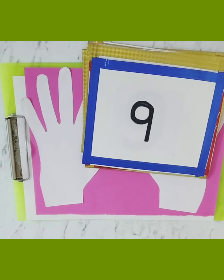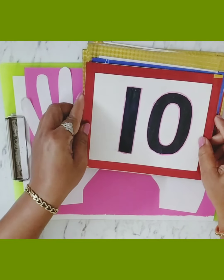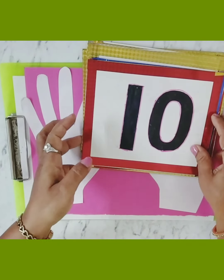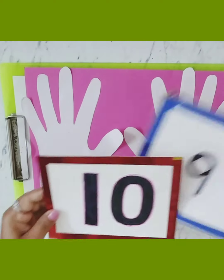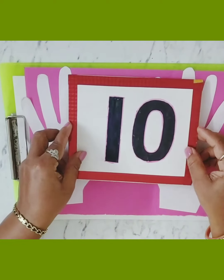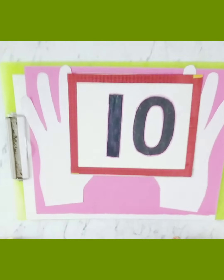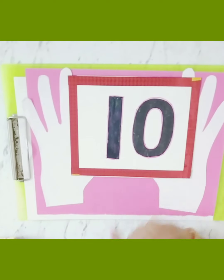Yes, aur humne abhi tak nine numbers seekhe hai, hai na? And now you know which number comes after nine. Bata do mujhe koon sa number aata hai nine ke baad mein. After 9 comes number 10. So children, this is number 10. Can you see? 1, 0 — ten.